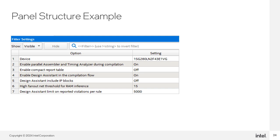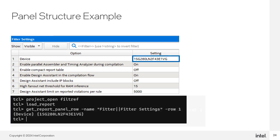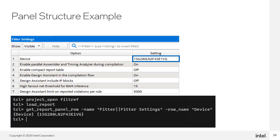Here's an example of how to access data in a report panel. You can refer to rows and columns by name or by numerical index. Column one also has the name 'setting'; row one also has the name 'device'. Use the get_report_panel_data command to get the value in a specific row-by-column cell. For example, get_report_panel_data with the full hierarchical path of the fitter settings report followed by row and column numbers should return the Intel Stratix 10 device. You can also use get_report_panel_row to return the entire row, passing either the index or the row name 'device'.